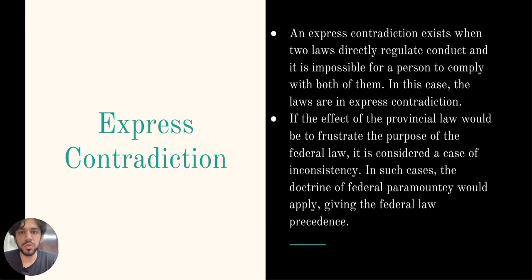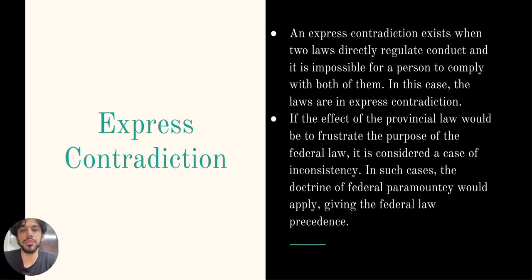When two laws directly regulate conduct and it is impossible to comply with both of them, an express contradiction exists. For example, if a federal law states that Japanese citizens in Canada must be afforded the same employment opportunities as Canadian citizens, and a provincial law states that Japanese citizens cannot be employed in the mines, the laws are expressly in contradiction to each other.